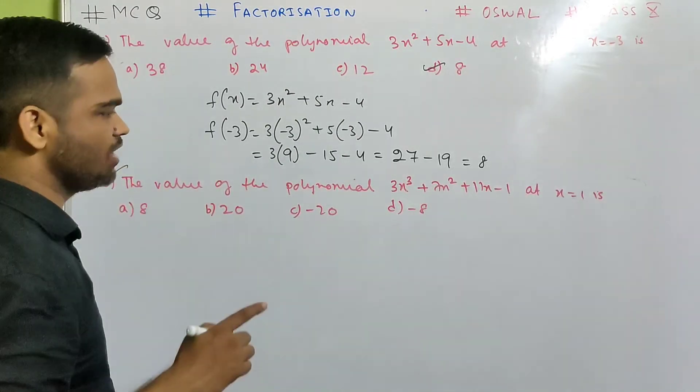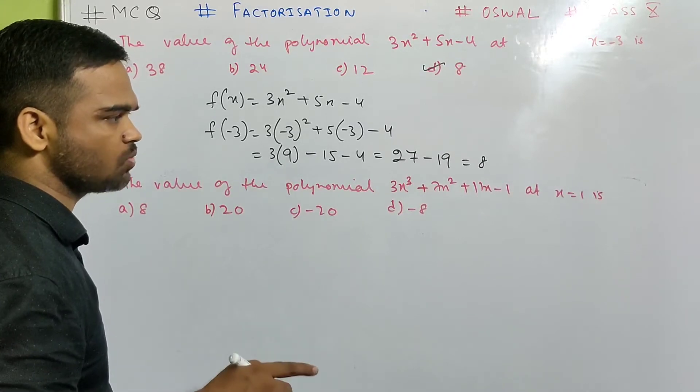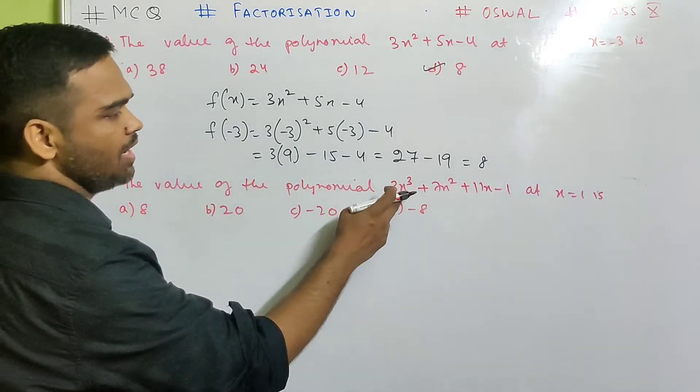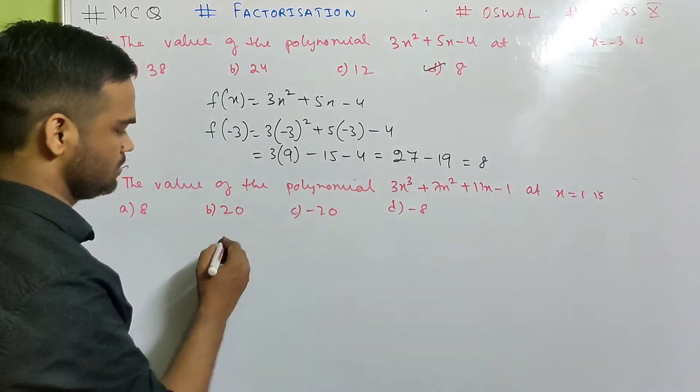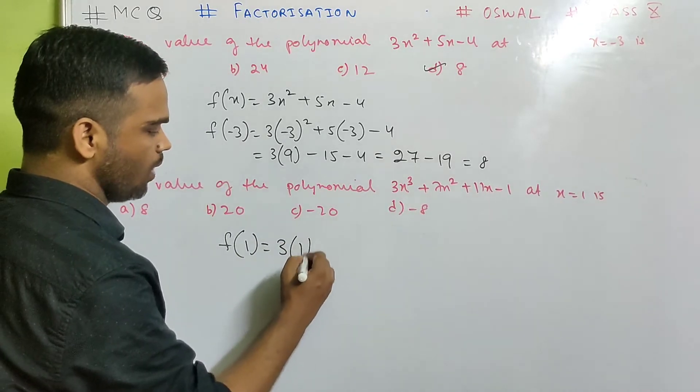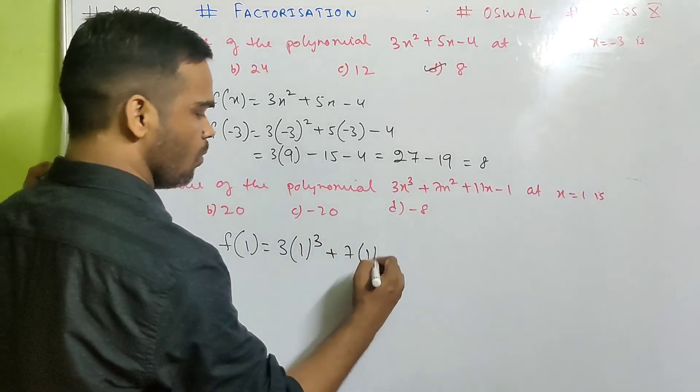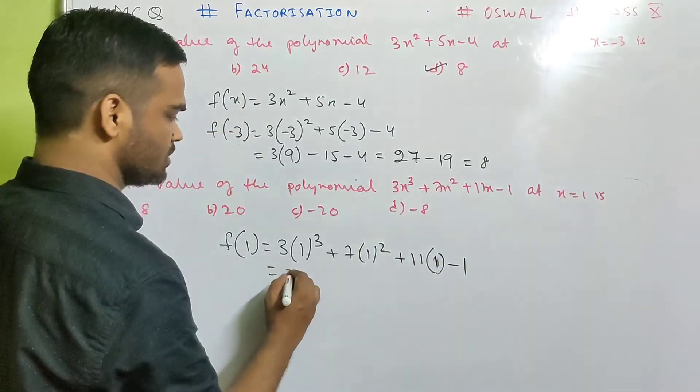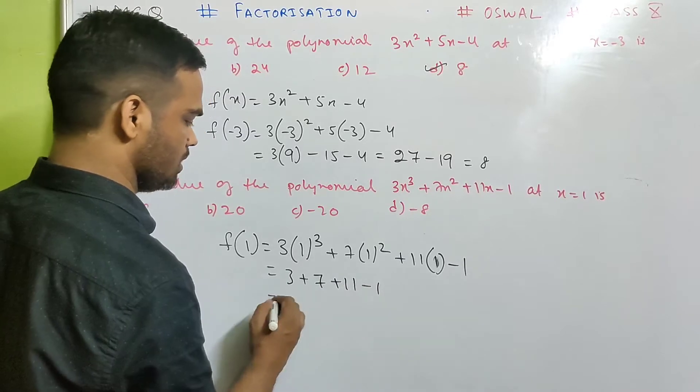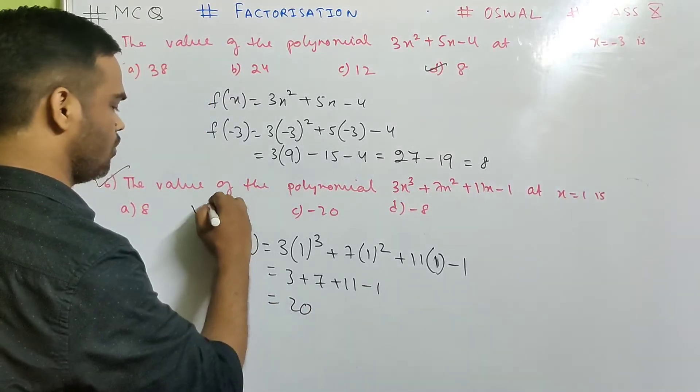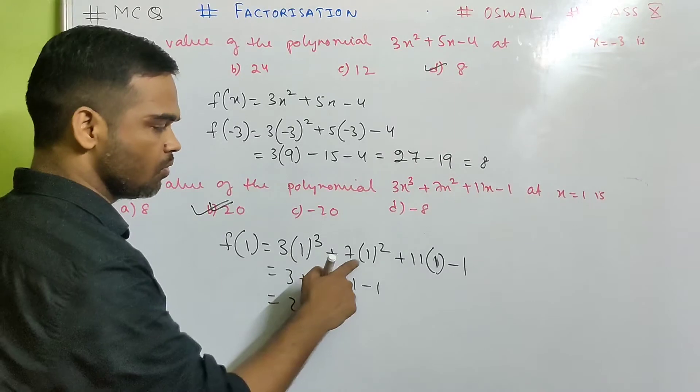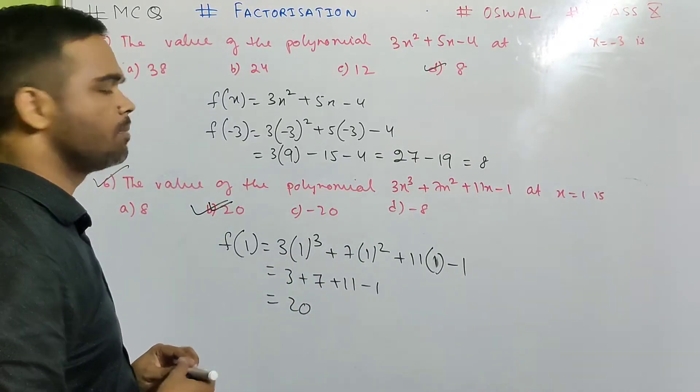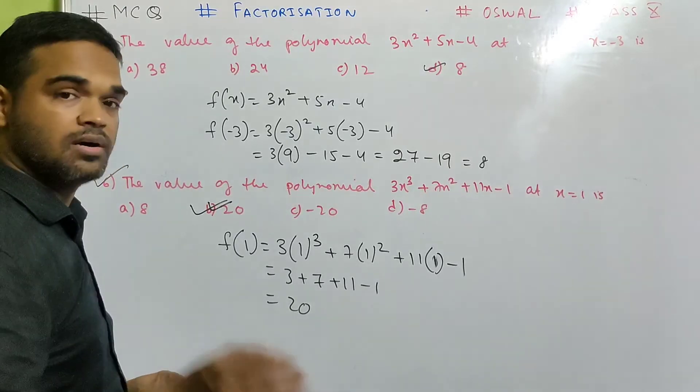Number 6. The value of the polynomial 3x cube plus 7x square plus 11x minus 1 at x equals to 1 is same pattern. Just instead of x you put 1. So f of 1 will be what? 3, 1 cube plus 7, 1 square, 11 into 1 minus 1. That's 3 plus 7 plus 11 minus 1. That's 20. Option B is correct. 1 cube is 1. Remember. 1 square is 1. So 3 into 1 is 3. So this was pretty easy.